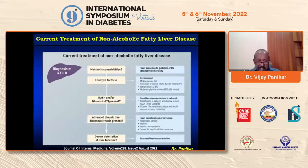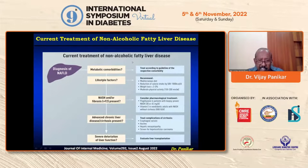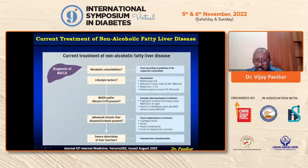A recent August 2022 publication in the Journal of Internal Medicine on current treatment of non-alcoholic fatty liver disease recommends diet, exercise, and weight loss. For pharmacological treatment: pioglitazone 30 to 45 milligrams in patients with biopsy-proven NASH, and vitamin E 800 IU per day in NASH patients without cirrhosis.